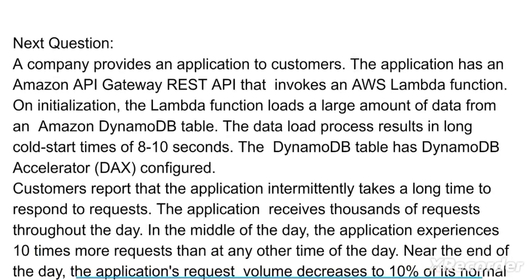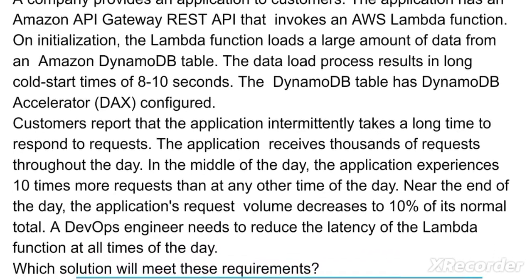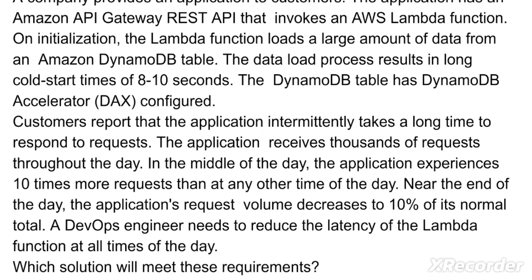The application has an Amazon API Gateway REST API that invokes an AWS Lambda function on initialization. The Lambda function loads a large amount of data from an Amazon DynamoDB table. The data load process results in long cold start times of 8 to 10 seconds. The DynamoDB table has DynamoDB Accelerator, that is DAX, configured. Customers report that the application intermittently takes a long time to respond. The application receives thousands of requests throughout the day, and in the middle of the day experiences 10 times more requests than at any other time.